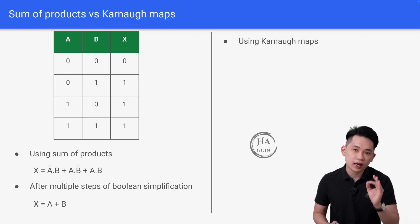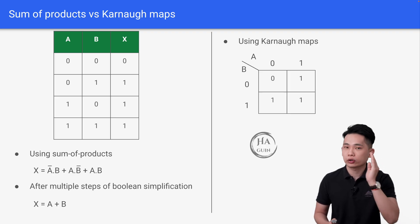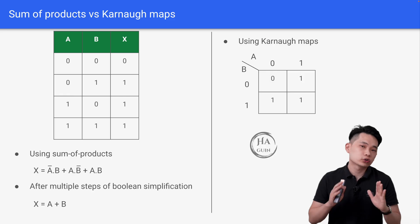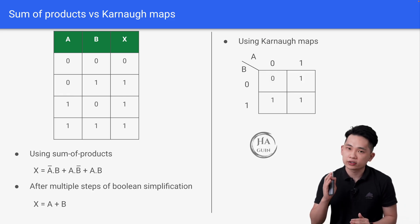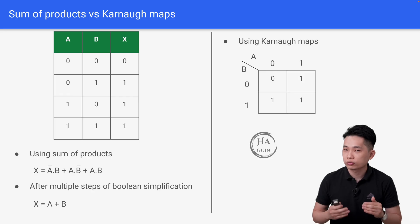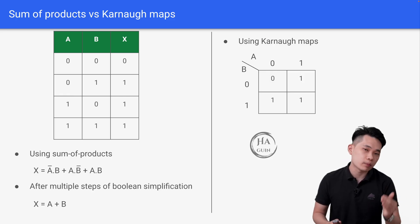And now let's look at using Karnaugh maps instead. We will first create a table with A on top and B on the side. So on the first box from the left is when both A and B are 0, and the last box from the right is when both A and B are 1.